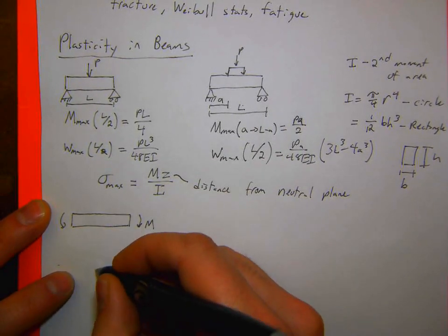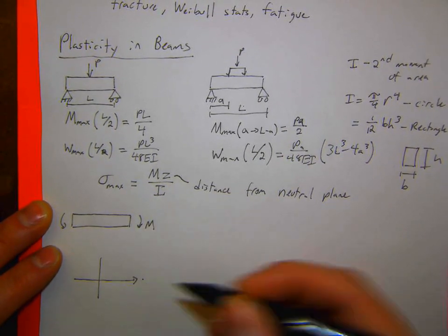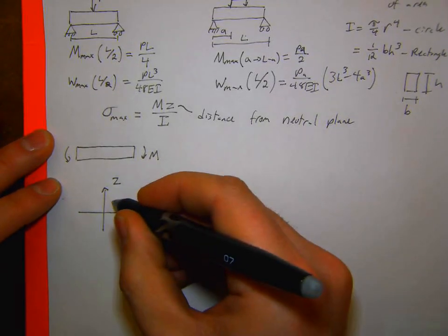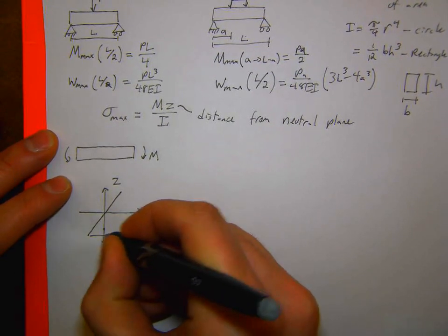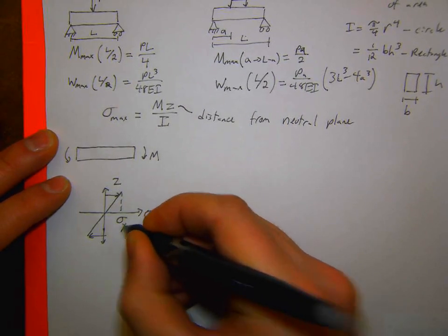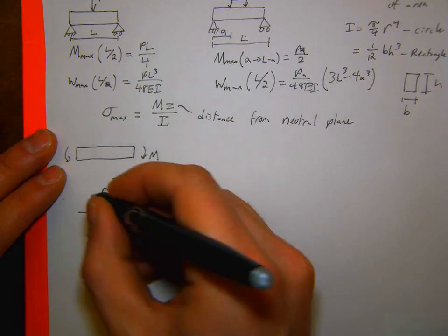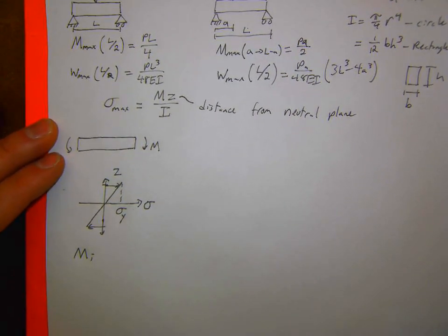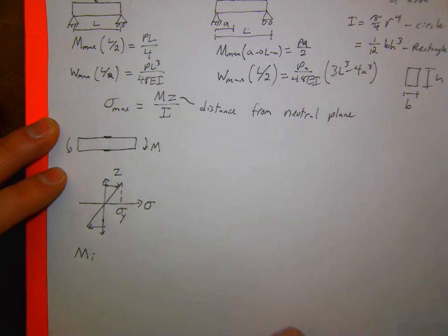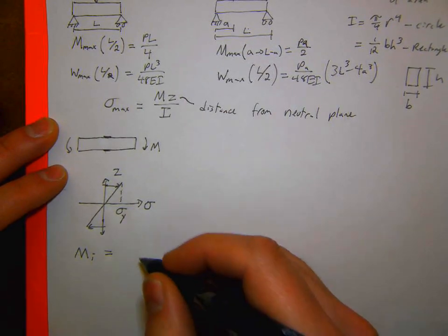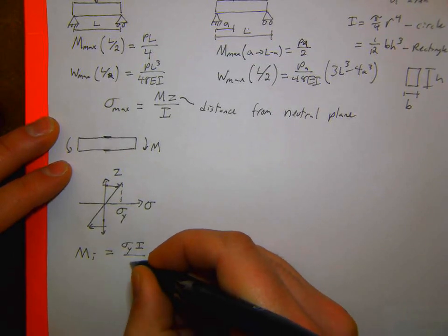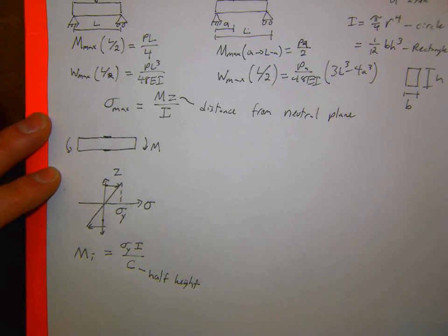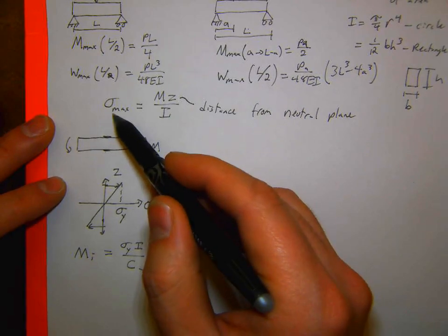For plasticity in beams, we have to figure out where the maximum bending moment is. If there's some moment in a beam, we can figure out where it will start to deform plastically. Plotting stress vs. distance z from the neutral plane, we're looking for the point where the stress hits the yield stress of the material at the maximum distance from the top of the beam.